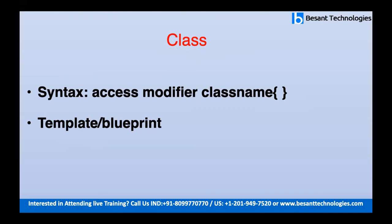Next is the syntax for creating a class. As I mentioned, if you want to print your name, you have to create a class first. The syntax starts with an access modifier followed by the class name. There are three types of access modifiers: public, private, and protected — these define from where the class or method can be called.